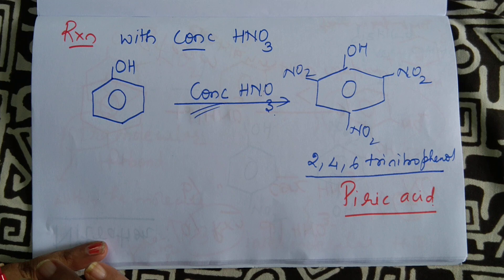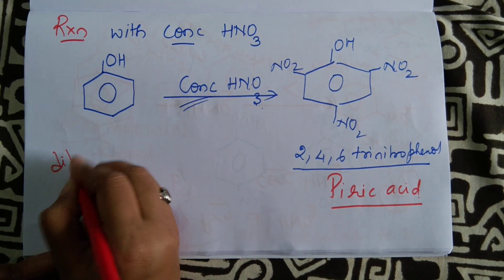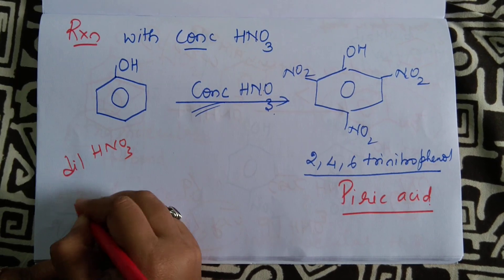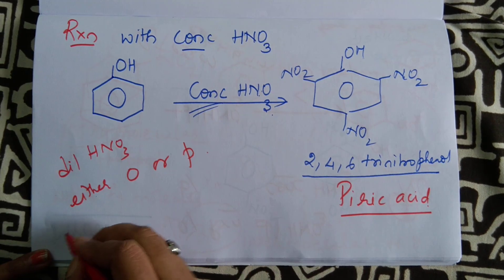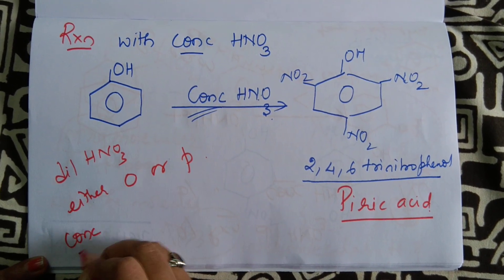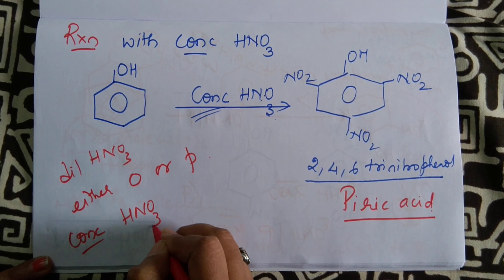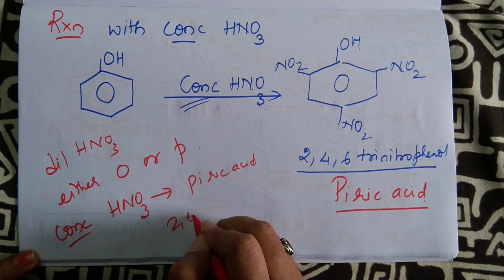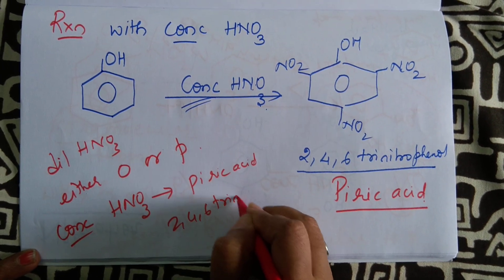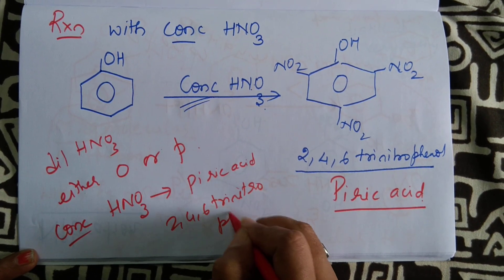So we have learned two concepts here. With dilute nitric acid, I either get ortho or para-substituted compound. And with concentrated nitric acid, I end up with what? Picric acid, which is nothing but 2,4,6 trinitrophenol.